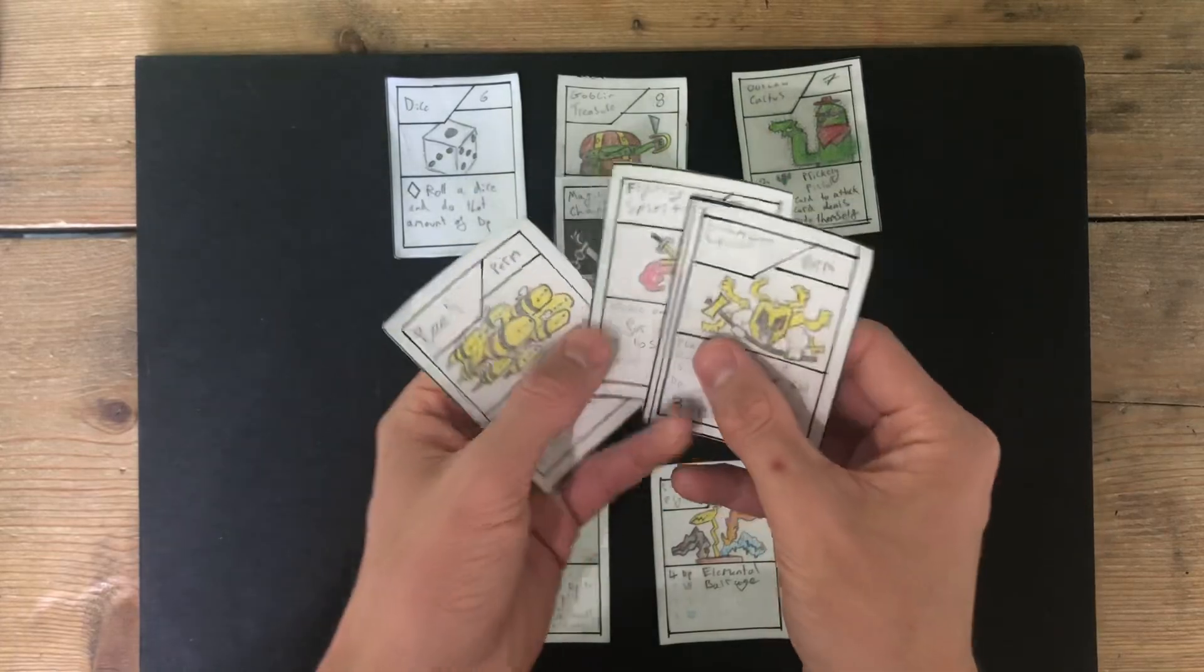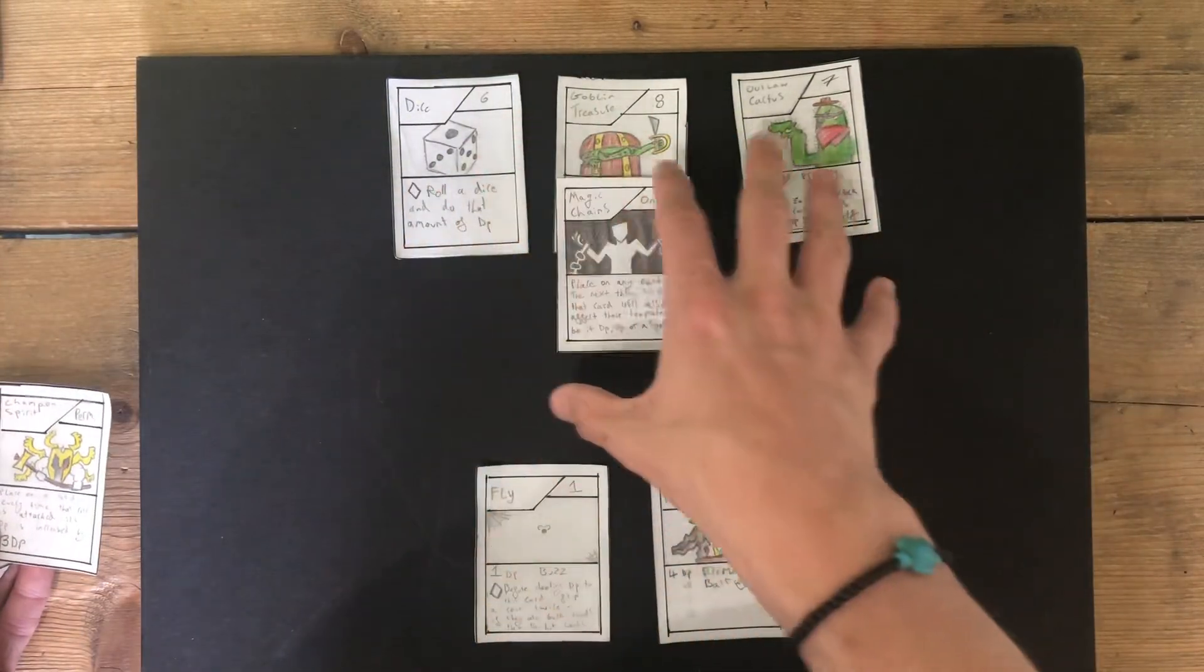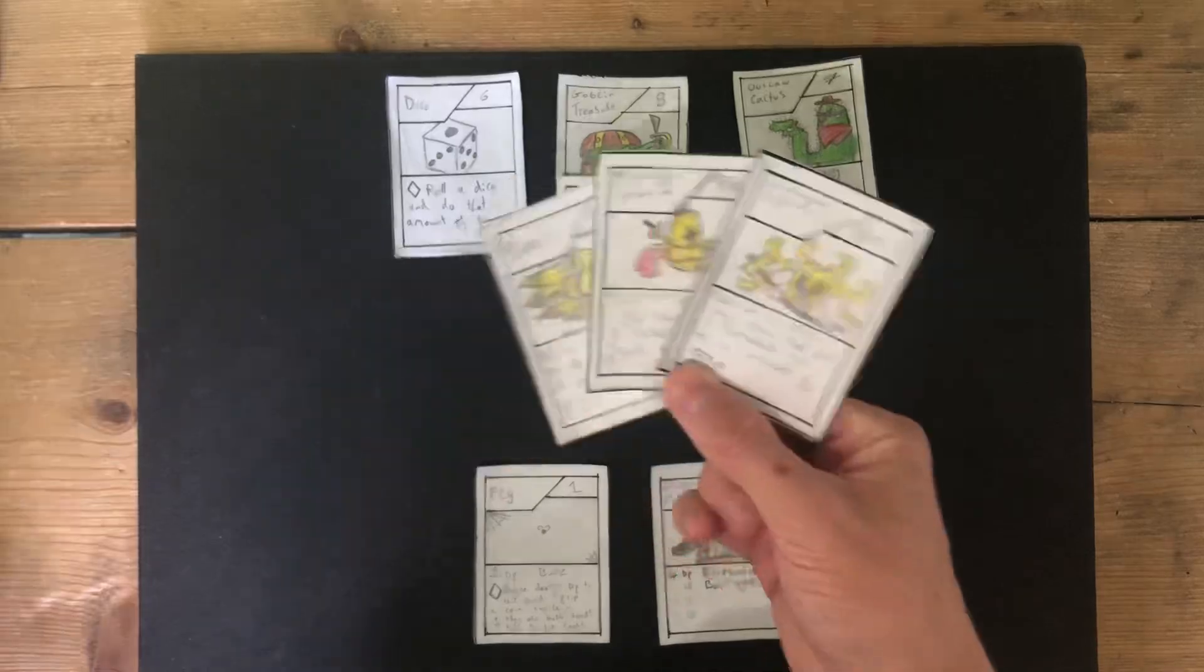Permanent spells like Champion Spirit, Fighting Spirit, BS, do not duplicate across teammates, due to them not having an immediate effect.